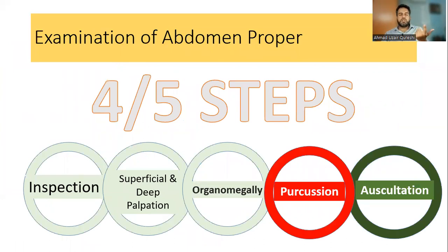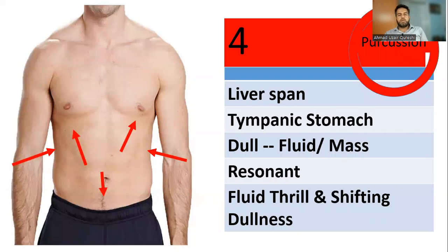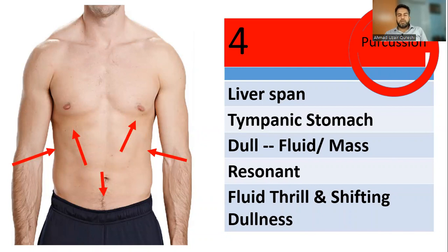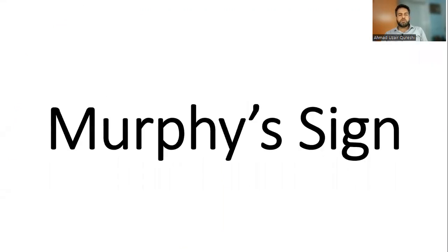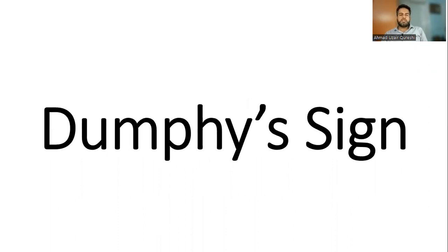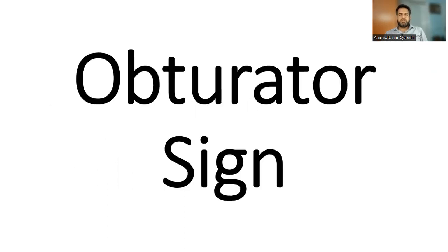Moving on to percussion: assess the liver span if not already done. Assess the tympanitic sound of the stomach — if absent, there may be fluid. A dull area can indicate fluid or a mass; resonance is normal. Confirm any fluid with fluid thrill and shifting dullness, and check for dullness over the urinary bladder. Important clinical signs include Murphy's sign for gallbladder disease, Dunphy's sign, Rovsing's sign, Psoas sign, and obturator sign for acute appendicitis.